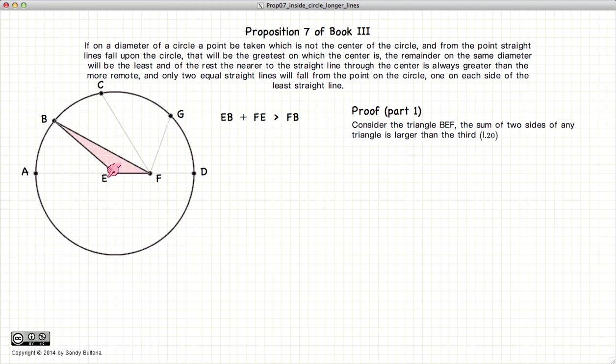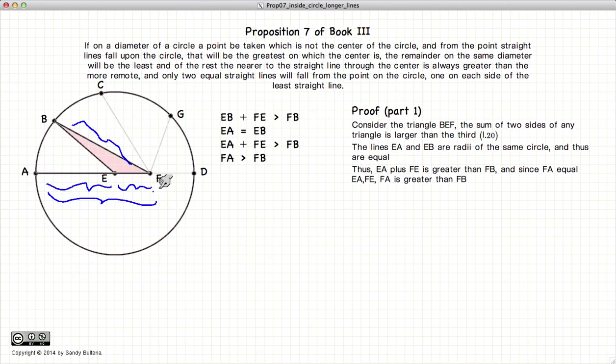Now BE is equal to AE. So BE plus EF is greater than BF or AE plus EF is larger. So AE plus EF is equal to AF and we have that AF is larger than BF.